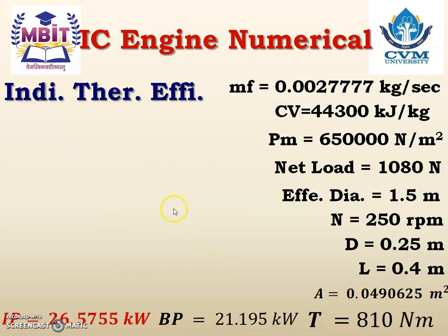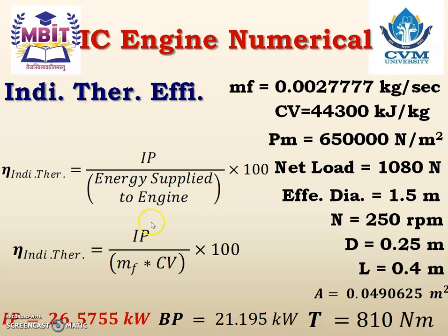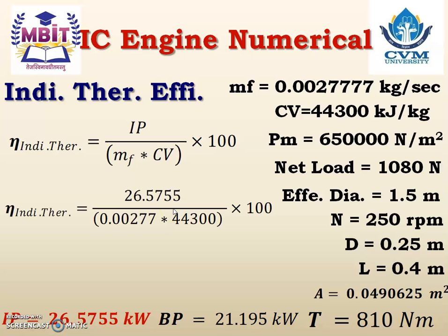Now let us calculate the next parameter: indicated thermal efficiency. The equation for indicated thermal efficiency is IP divided by energy supplied to the engine, multiplied by 100. That is IP / (MF × CV) × 100. MF has already been converted to kg/s, and CV is given. Substituting the values and calculating, indicated thermal efficiency = 21.657%.